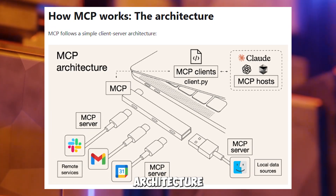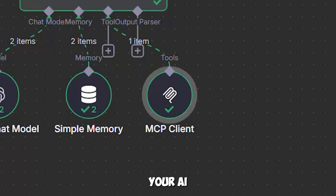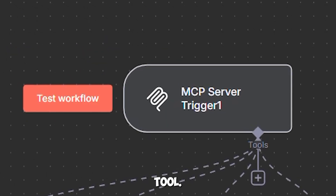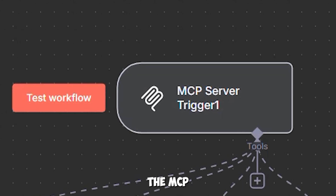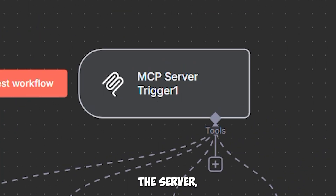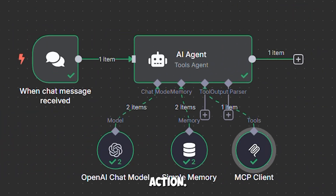MCP's architecture consists of three components. The MCP host is N8N itself, where your AI agent resides, processing inputs and making decisions. The MCP client is a specialized node in N8N that connects your agent to the MCP server, fetching tool definitions via an HTTP request. The MCP server is the heart of the system — a standalone service hosting a JSON tool registry. When the agent receives a task, the client queries the server, retrieves the tool set, and passes it to the LLM, which selects and executes the appropriate action.